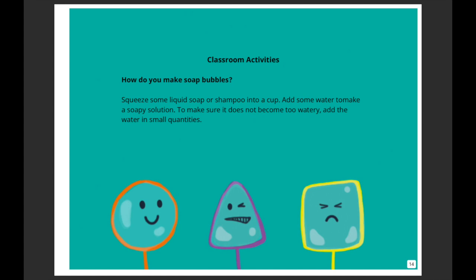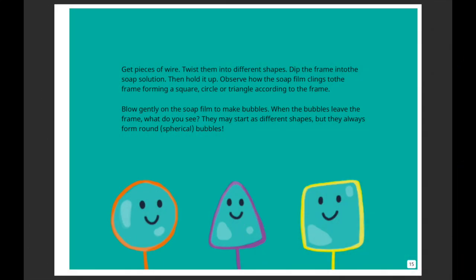To blow some soap bubbles at home, squeeze some liquid soap or shampoo into a cup and add some water to make a soapy solution. Make sure it does not become very watery — add water in very small quantities. Then ask your mama or papa to give you a piece of wire and try twisting it into different shapes: a circle, a triangle, a square, a rectangle, a star — whichever shape you want. Then dip those frames into the soap solution.